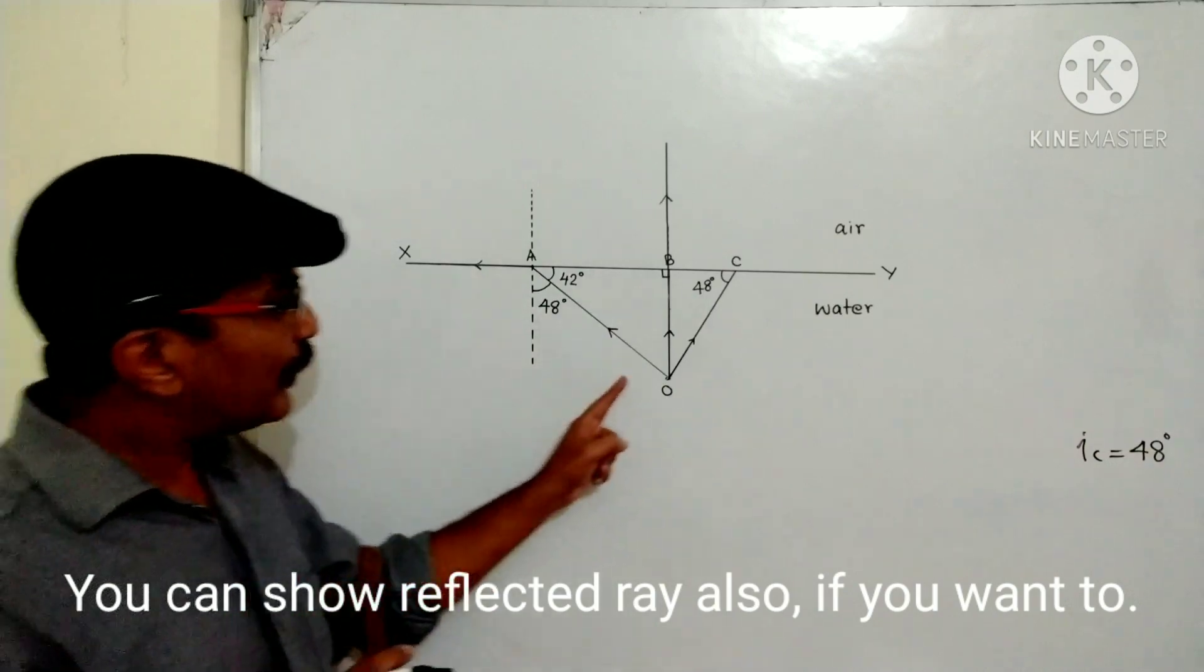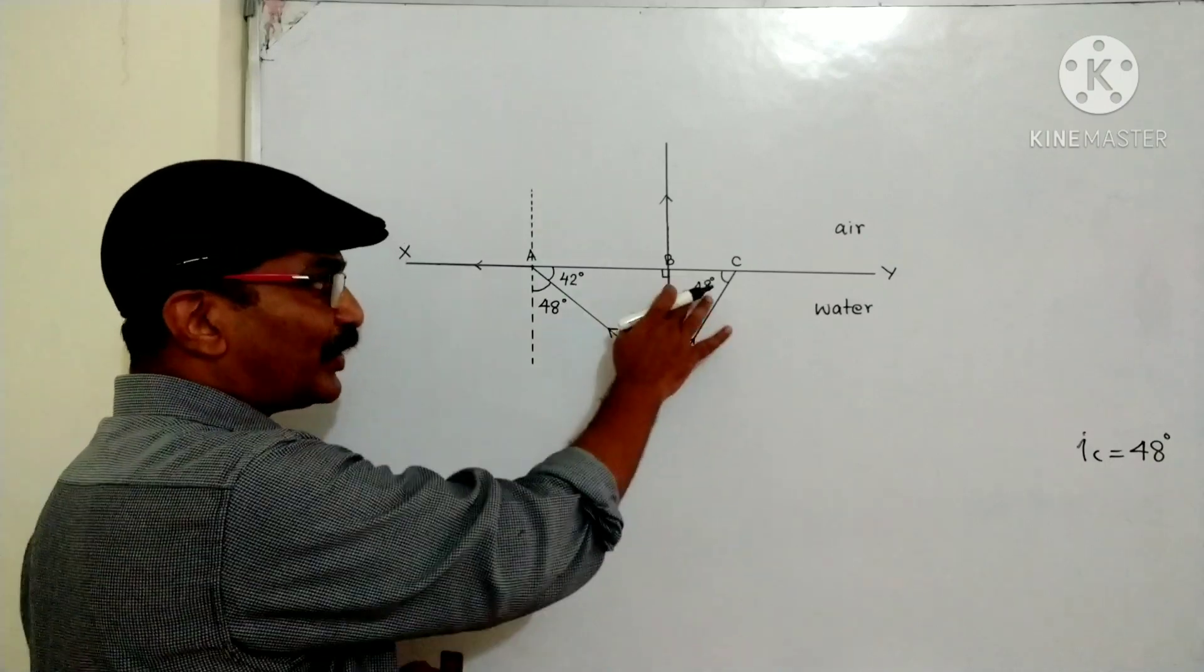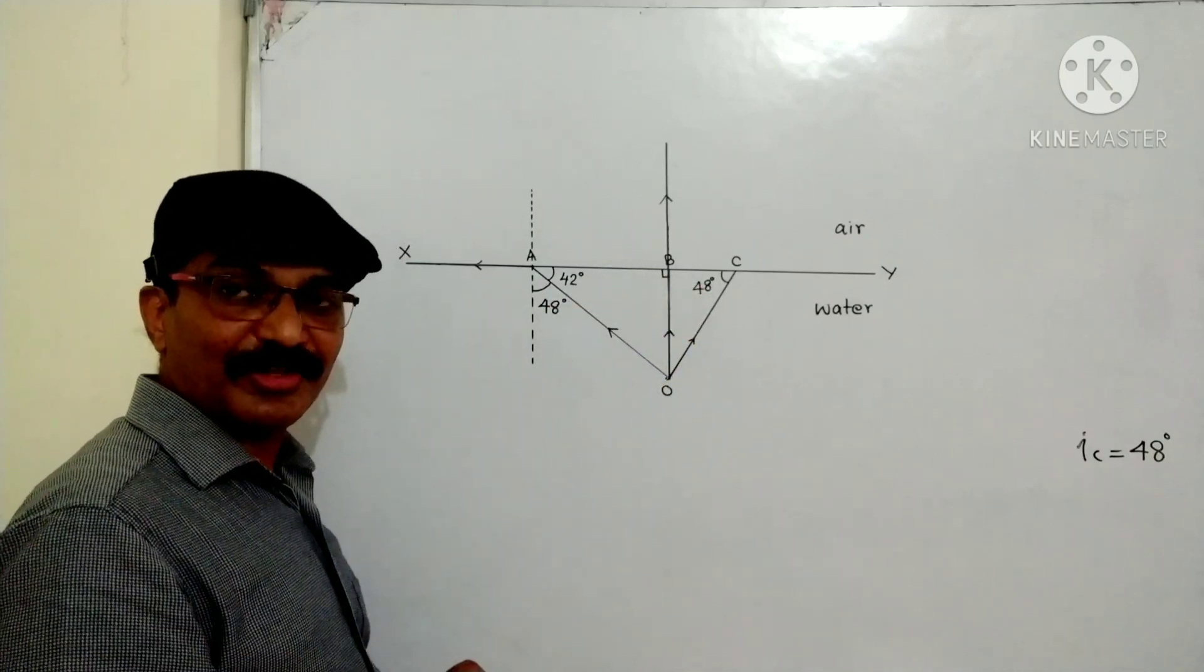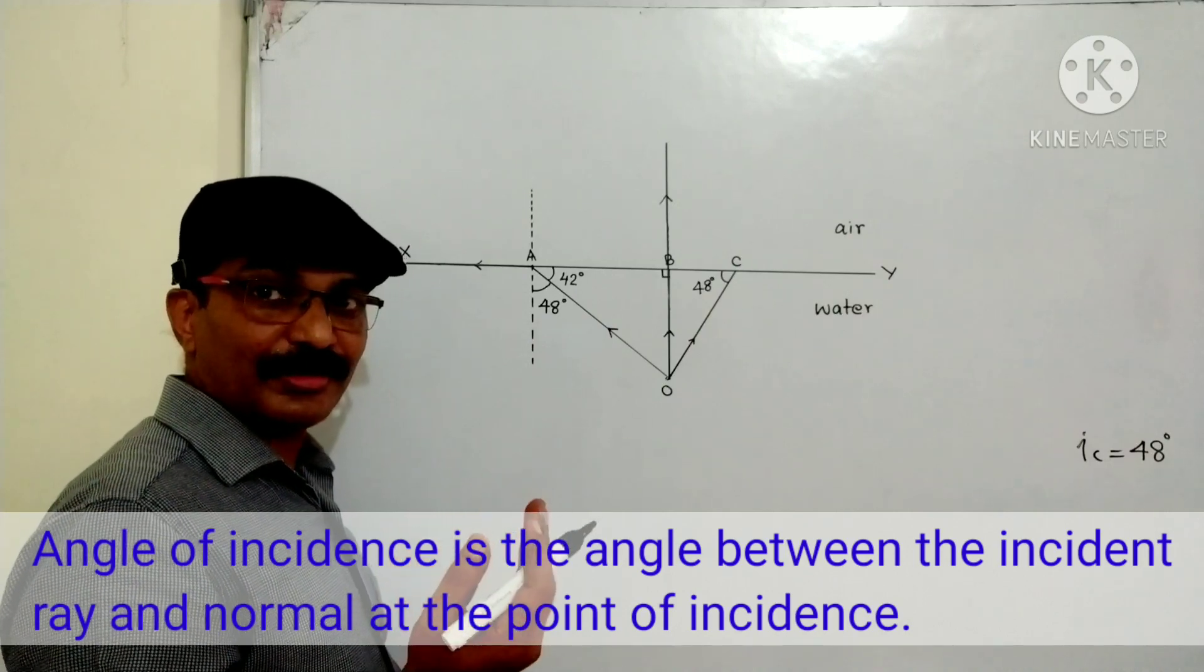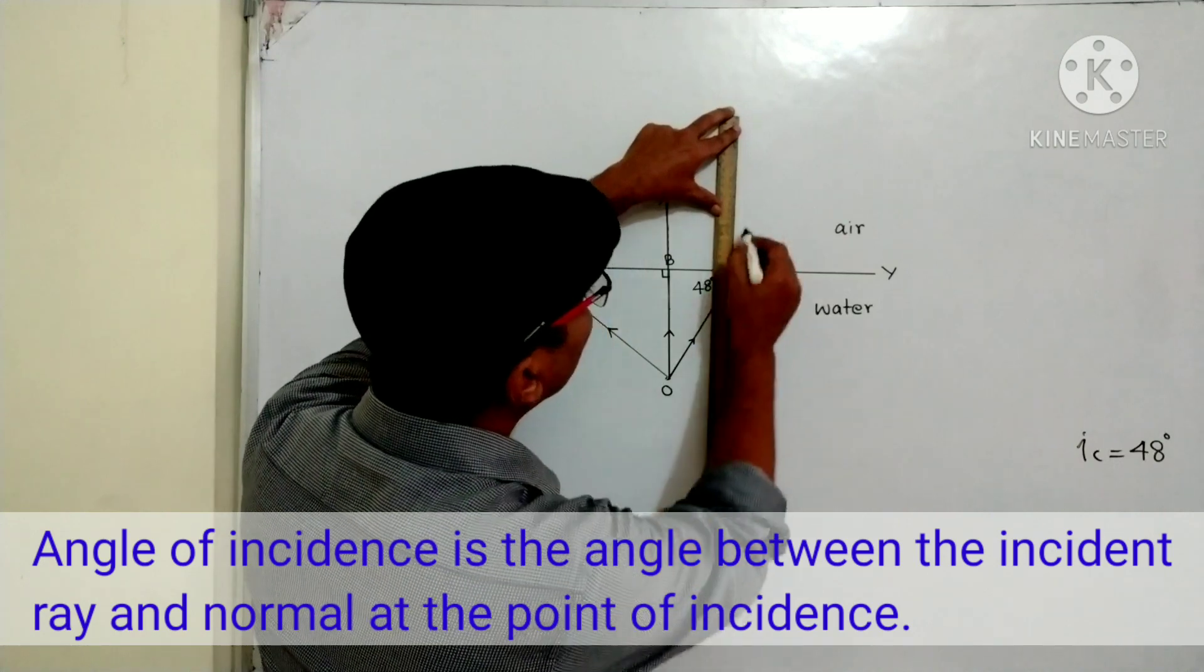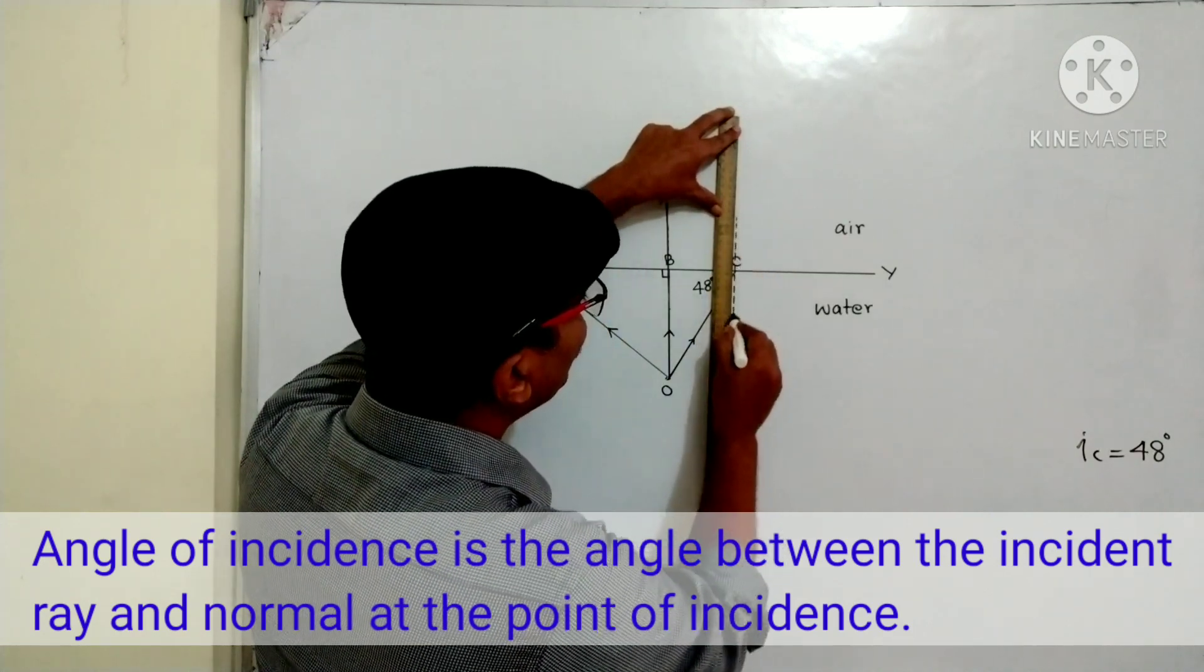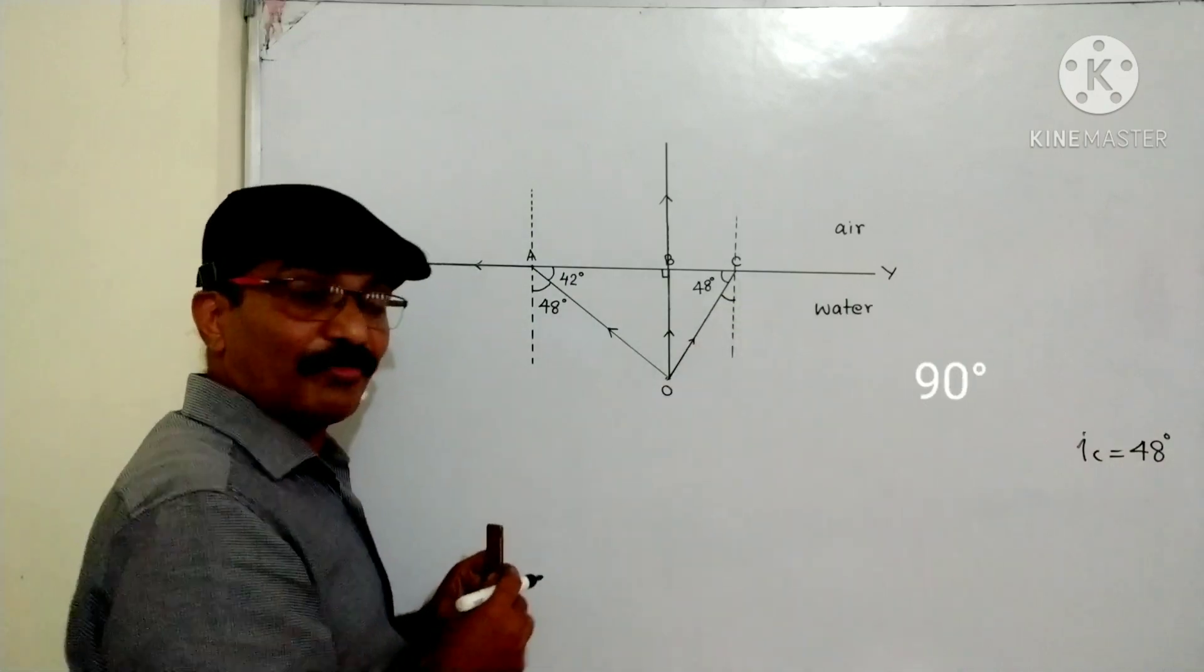Well, when you come to this, what is the angle of incidence? As you already understood, 48 degrees is not the angle of incidence there. Angle of incidence is the angle between incident ray and the normal. Let me make the normal here. So when you calculate this, you will get 42 degrees.